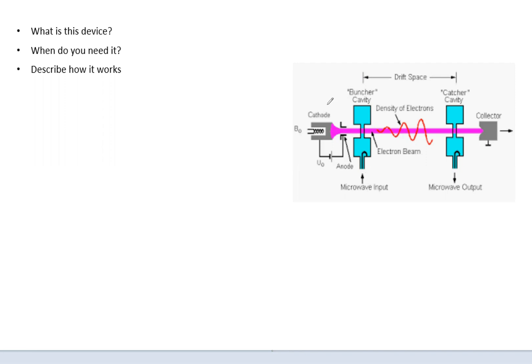So to begin, let's talk about what you need to know to accurately answer this question. You have to know what the cathode does, you have to know the bunter cavity, the drift tube, the catcher cavity, and you need to know the collector. If you know what those things do in relation to each other and how they work, I think you will have prepared and set yourself up to do well in a similar question like this.